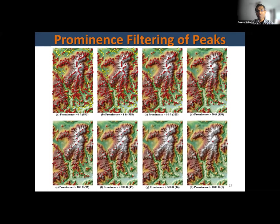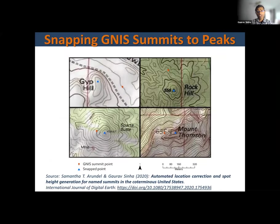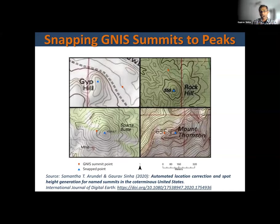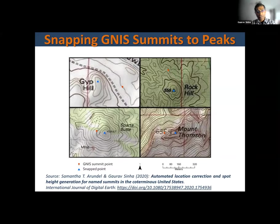One thing to note is that when we extract peaks from DEM analysis and then try to map them to the named features for which we have coordinates, oftentimes they don't exactly match up. The blue is the actual morphometric peak from DEM analysis and the red is the location of the current GNIS point in the USGS database, which has been picked up from old traditional topographic maps. Sam and I also worked on a paper — Sam mostly did this work — published recently on a simple process to grow out buffers and try to snap these GNIS summits to the morphometric peaks. Otherwise we can't do detailed analysis, since the GNIS summits would lie down the slope. Snapping — improving the accuracy essentially — for mapping and trend analysis was important.